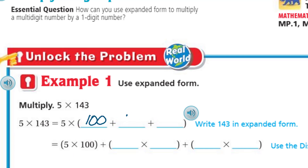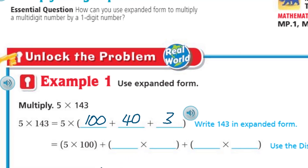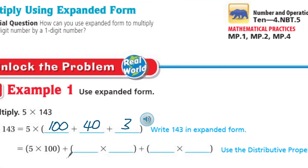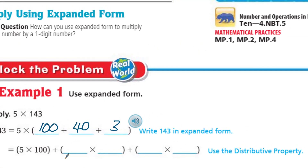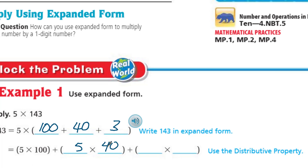We have a 1 in the hundreds spot, so that's going to give us 100. Then 100 plus 4 in the tens place is 40, plus our 3. So we have 5 times 100 plus — and it says use the distributive property — so we're going to take 5 times 100, plus 5 times 40, and then 5 times 3. I just love when things work out — this is beautiful!